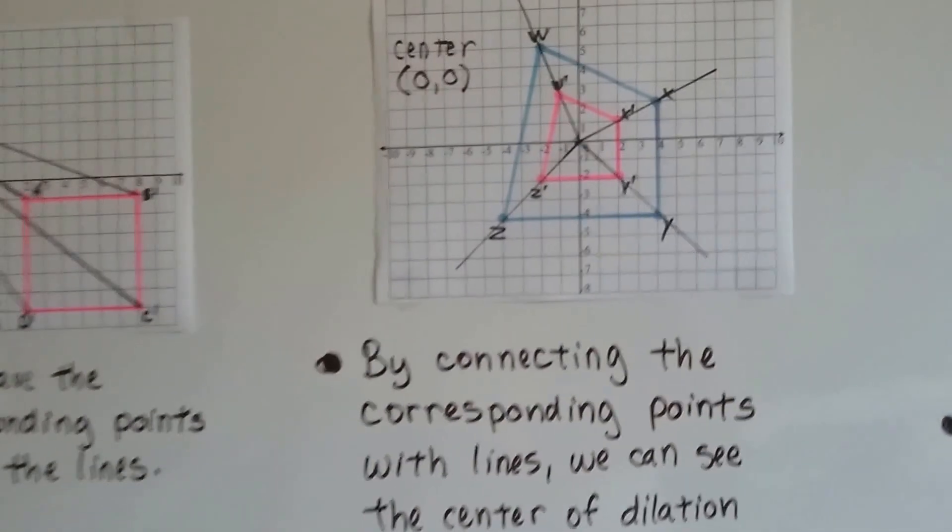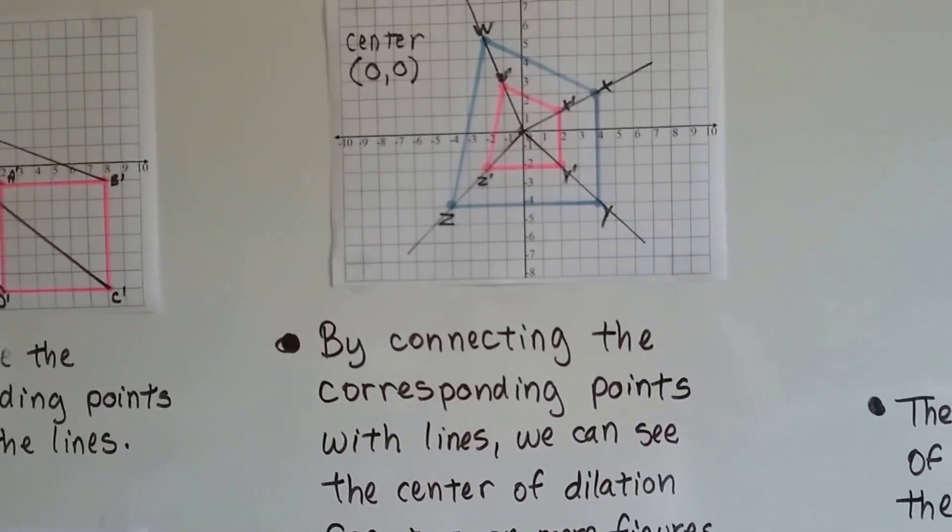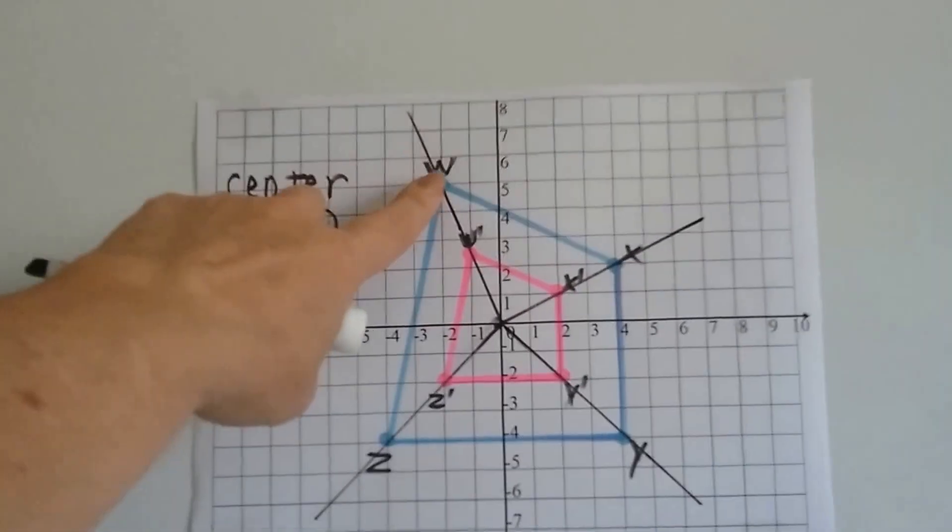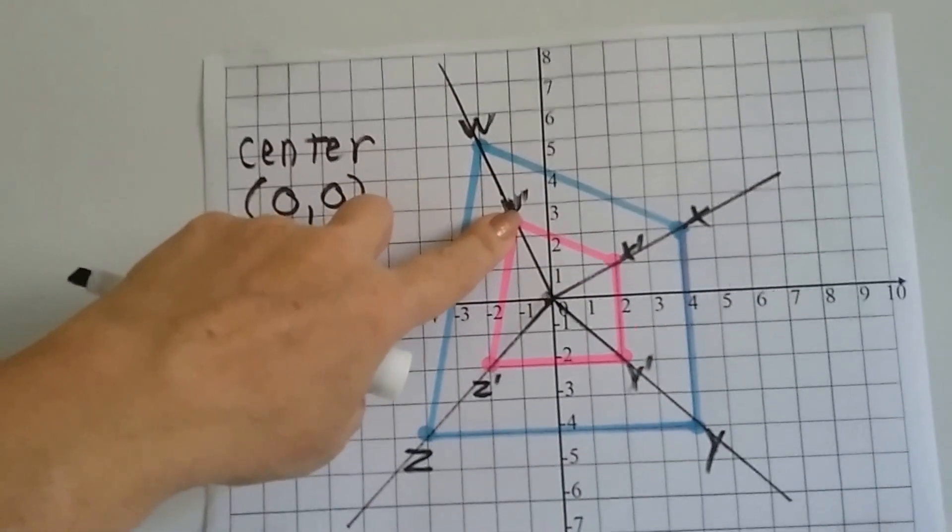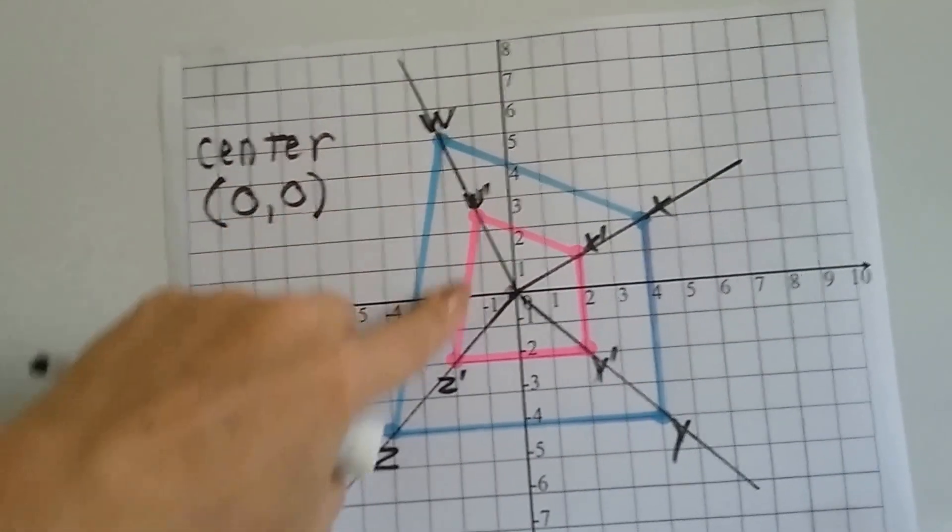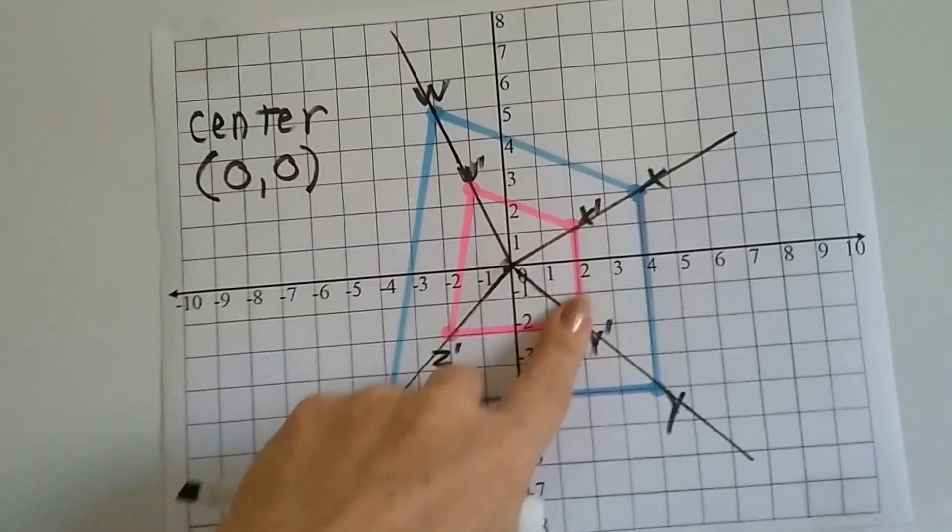By connecting the corresponding points with lines, we can see the center of dilation for two or more figures. It kind of looks like a spiderweb. Here's w and here's w prime. Because this has got the little tick mark for the prime notation, we know that the smaller pink one is the copy. This blue one is the pre-image, the original.